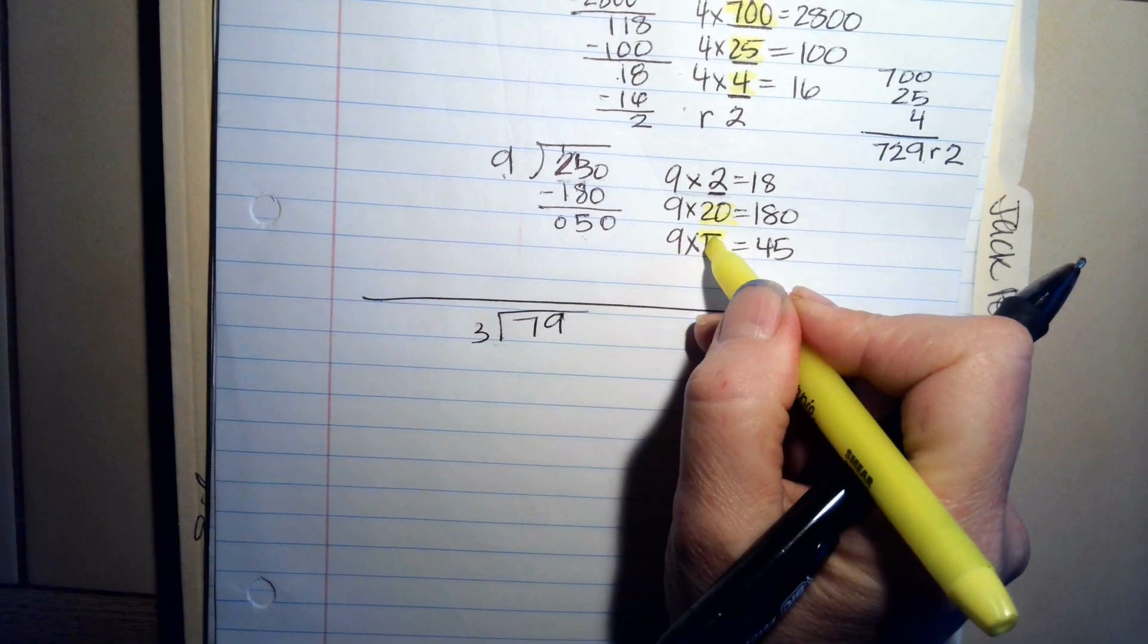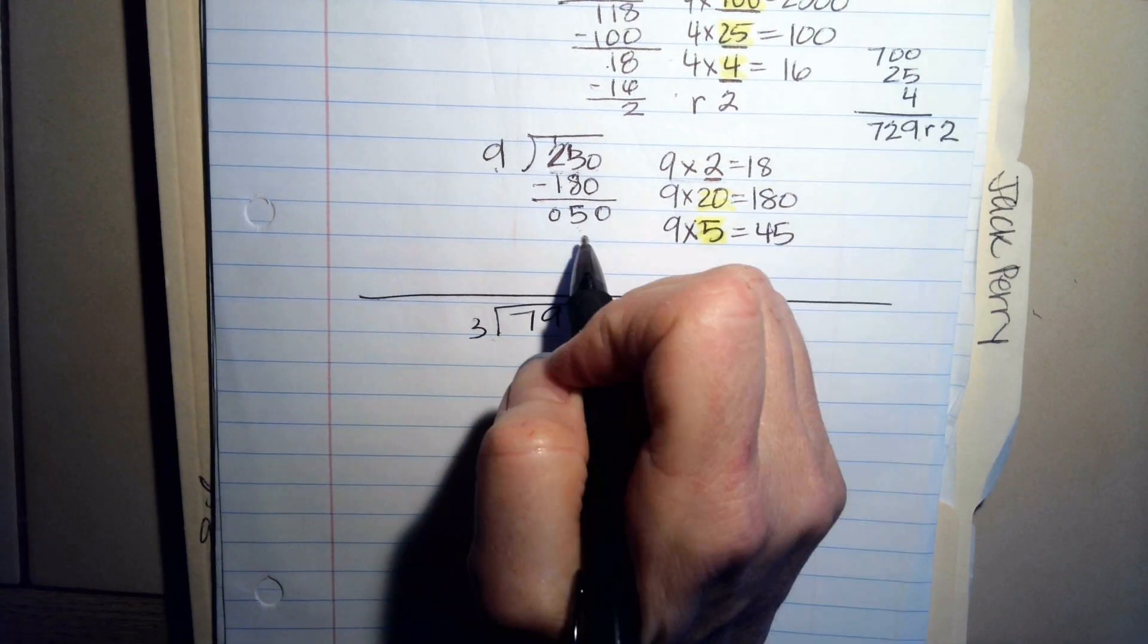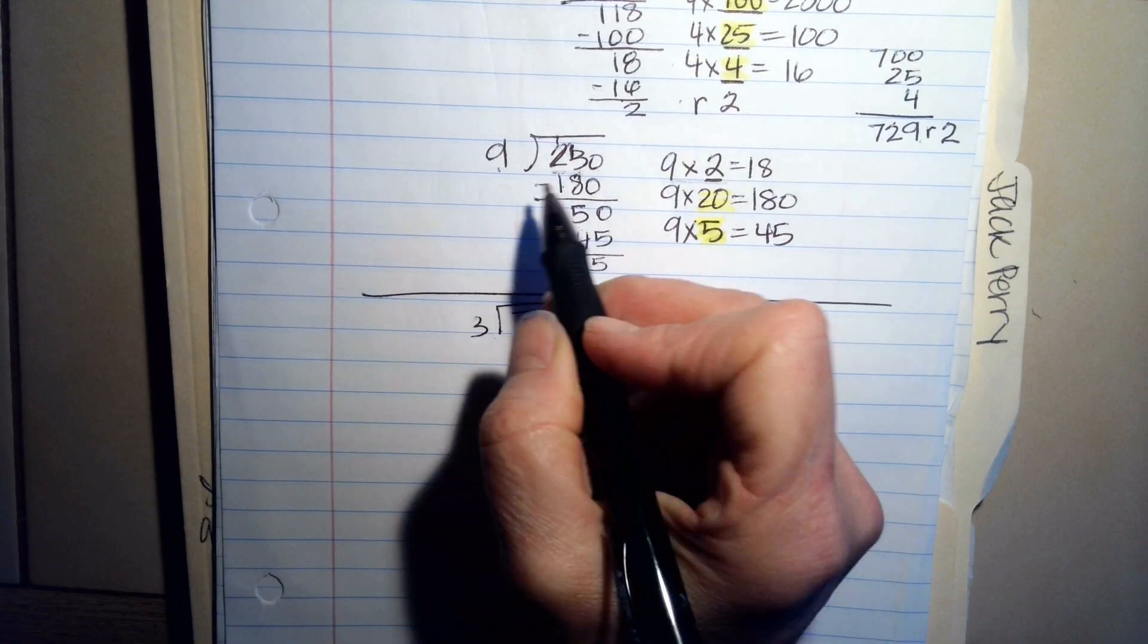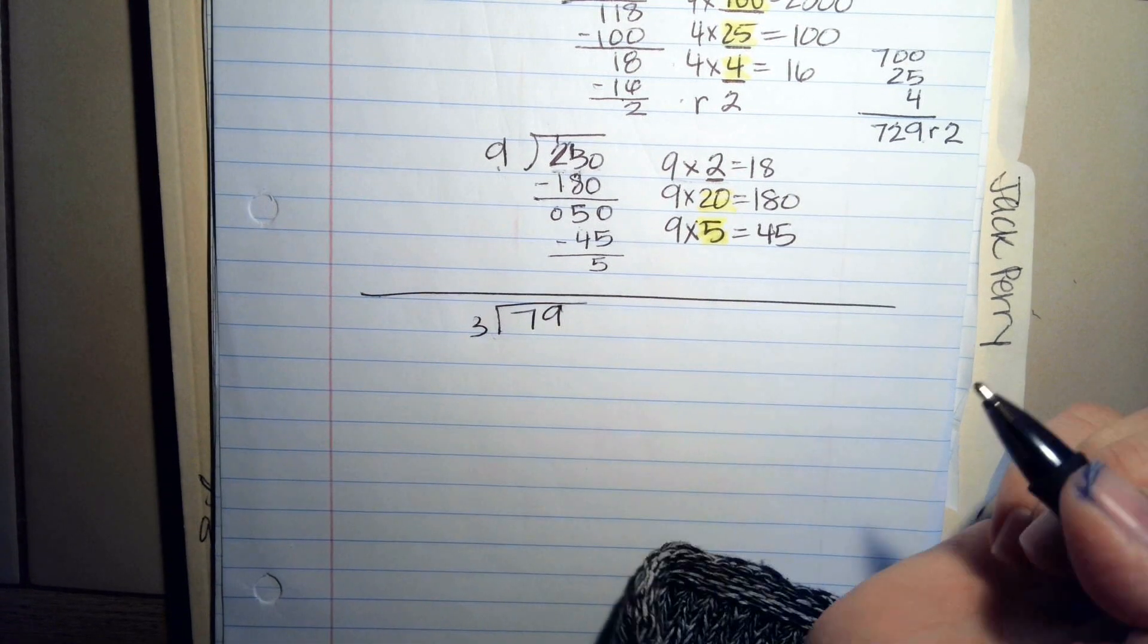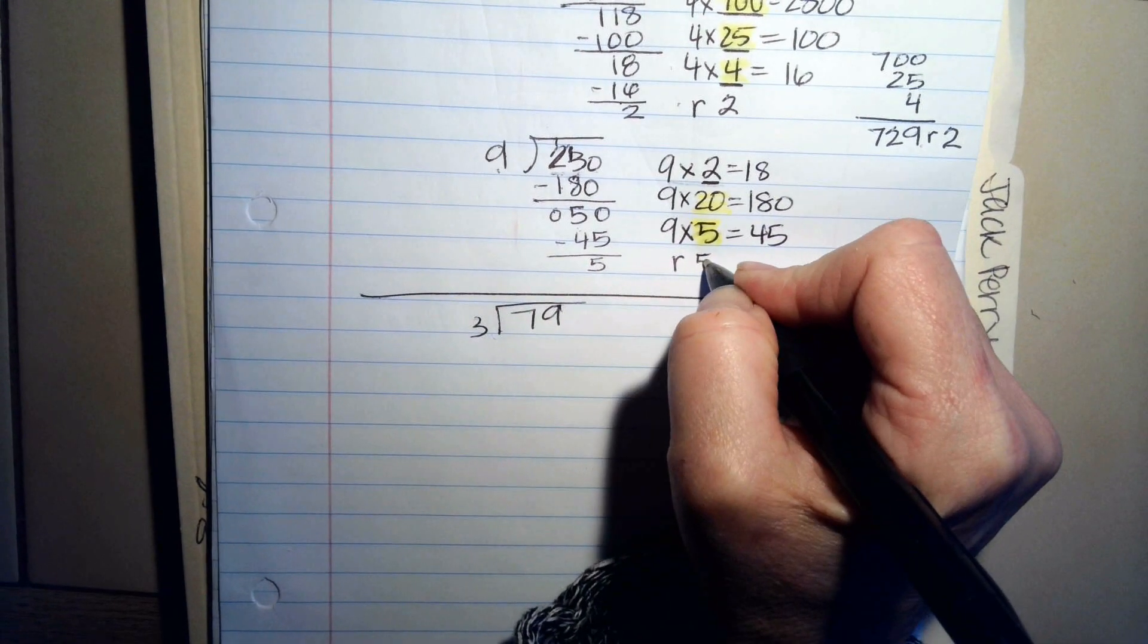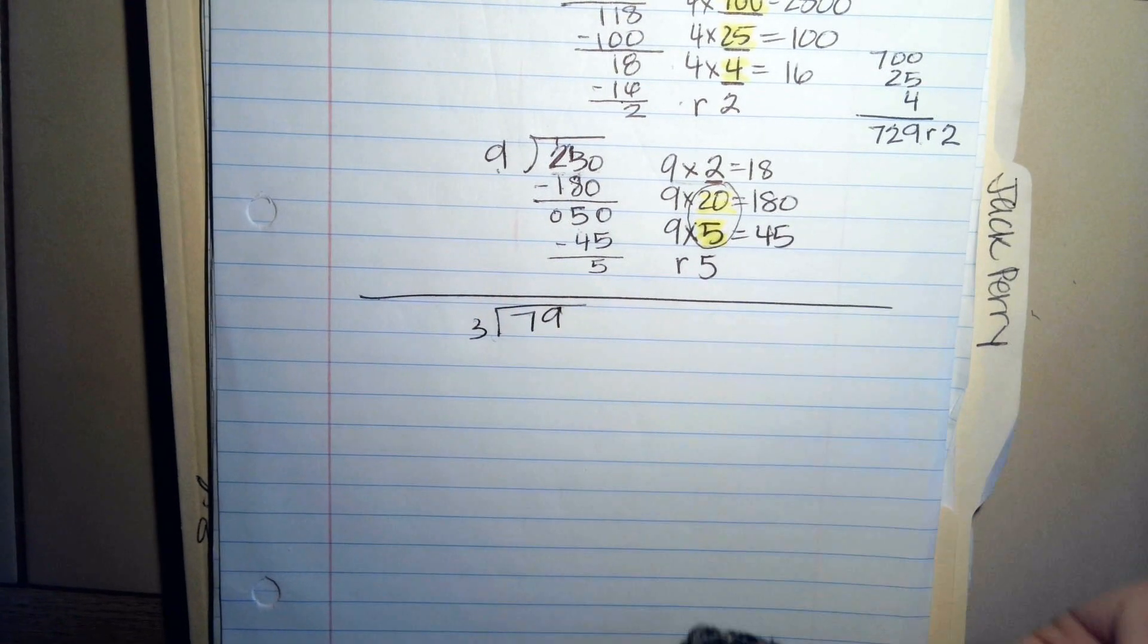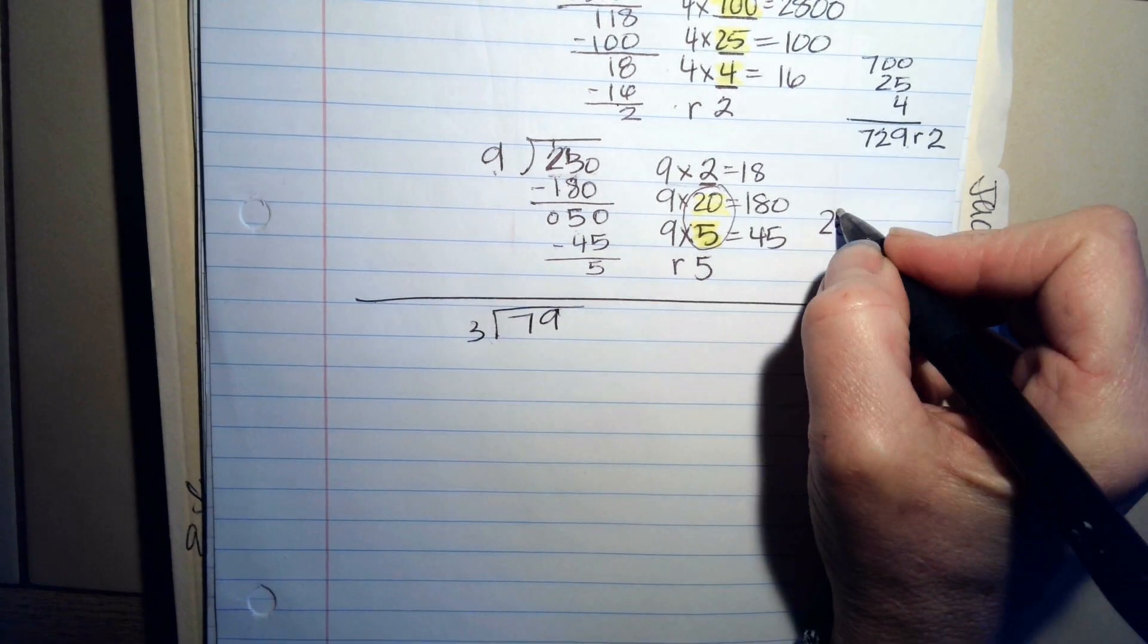I like to use a highlighter to do this, but you can also just underline it or circle it. It's fine. And then we have a remainder of 5. Can 9 go into 5? No. So that's our remainder. And then these right here, we add together. 20 plus 5 equals 25. Remainder 5.